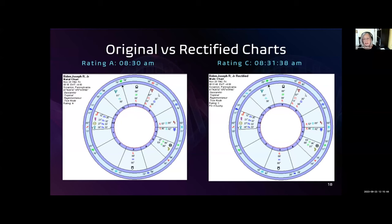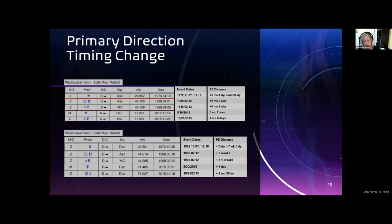The changes to the natal chart are very minor. The ascendant moved about 22 minutes, the midheaven moved 34 minutes, and the moon moved about one minute. But the changes to the primary directions are significant. The new birth time changes the primary directions for five or six months.